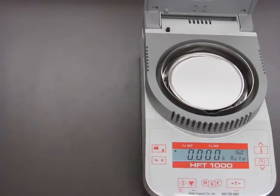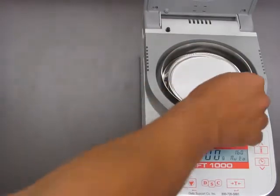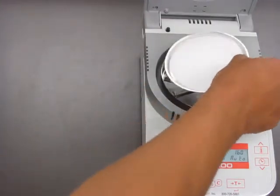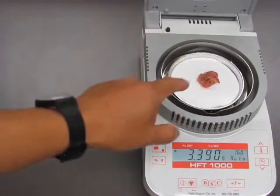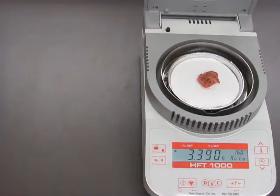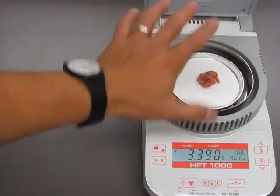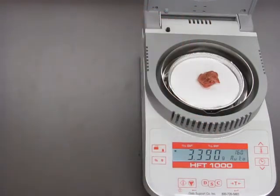Once you have zeroed out the reading, you place your sample on the top of the pad. So I already prepared something here. You will see your target is about three to four grams of sample. So that's how it would look like once you have the right sample size.